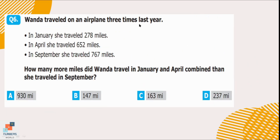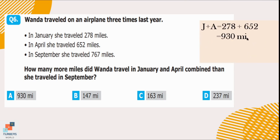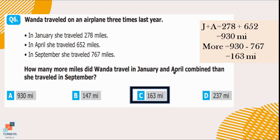Question number 6. Brenda travelled on an airplane 3 times last year. In January she travelled 278 miles, in April she travelled 652 miles, and in September she travelled 767 miles. How many more miles did Brenda travel in January and April combined than in September? We add the miles for January and April: 278 plus 652 equals 930 miles. Then we subtract the September miles: 930 minus 767 equals 163 miles. So, option C is correct.